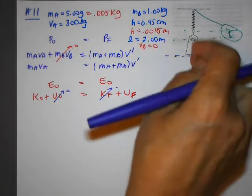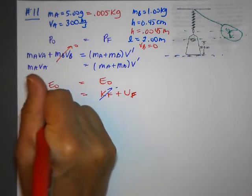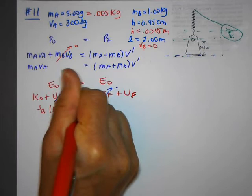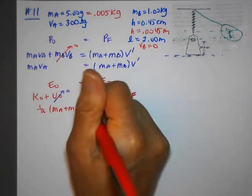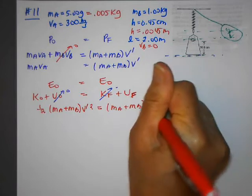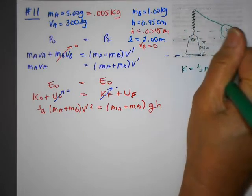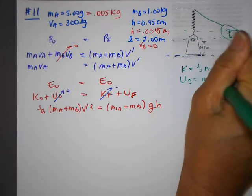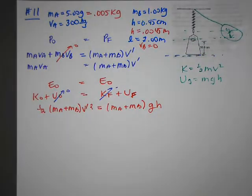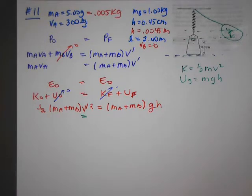So down here, and this is once the bullet now makes it go up, we're going to have here one half (MA + MB) V prime squared is equal to (MA + MB) MGH. Because kinetic energy is equal to 1/2 MV squared, and gravitational potential energy is MGH. So if I'm looking over here and I want to solve for V prime, I can rearrange the equation.